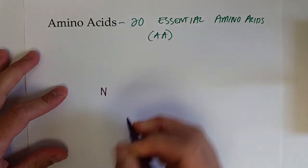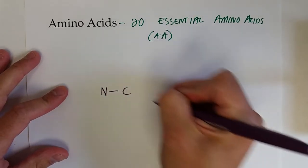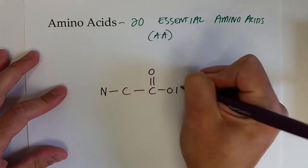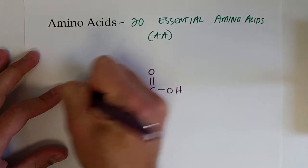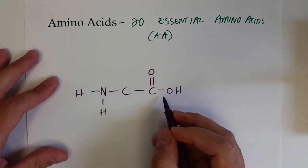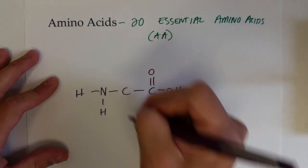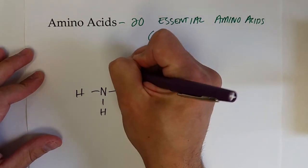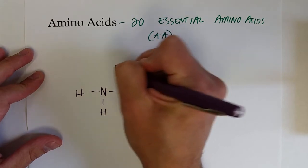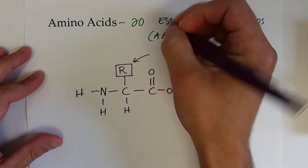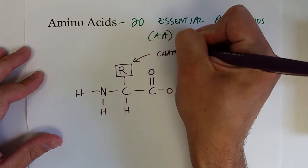We've got an amine group bonded to a carbon which is bonded to a carboxylic acid. The amine group is bonded to the carboxylic acid through a central carbon. The central carbon is always bonded to one hydrogen and it's always bonded to something else which we're going to call the R group. And this is what changes for each amino acid.